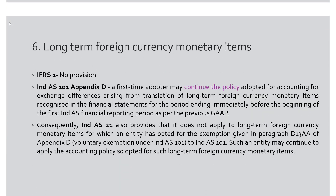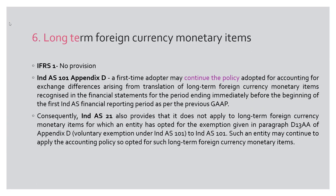Let's now start with today's discussion. The sixth carve-out is on long-term foreign currency monetary items. Monetary items — which we would have read about in Accounting Standard 11 — include cash, bank balances, payables, and receivables. On the other hand, fixed assets, investments, and subsidiaries are examples of non-monetary items. When an asset or liability which is a monetary item is denominated in foreign currency, it is referred to as a foreign currency monetary item.